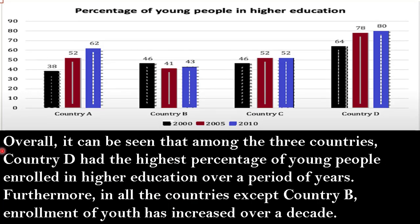Conclusion: Overall, it can be seen that among the four countries, Country D had the highest percentage of young people enrolled in higher education over the period. Furthermore, in all countries except Country B, enrollment of youth increased over the decade.